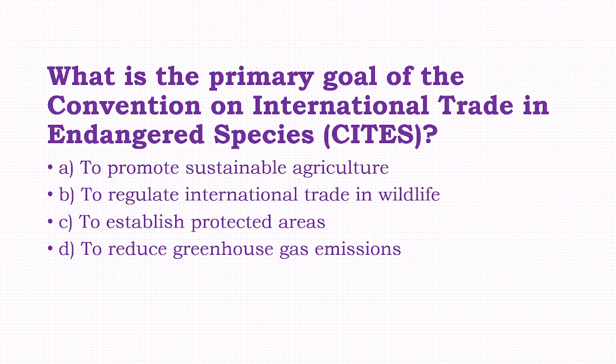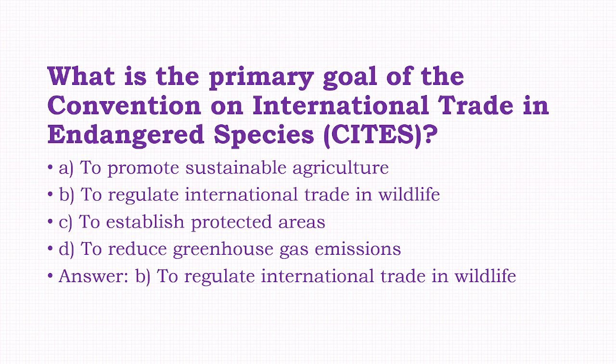What is the primary goal of the Convention on International Trade in Endangered Species (CITES)? Options: to promote sustainable agriculture, to regulate international trade in wildlife, to establish protected areas, to reduce greenhouse gas emissions. The answer is option B, that is to regulate international trade in wildlife.